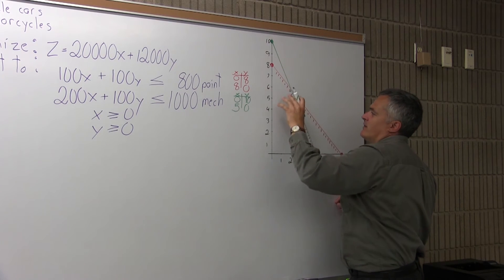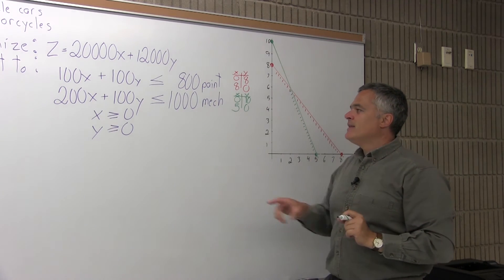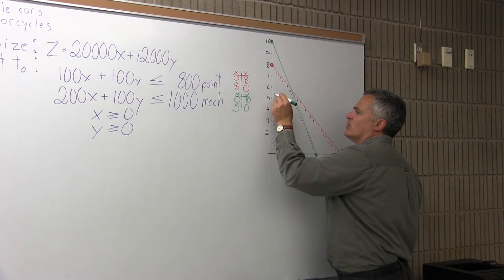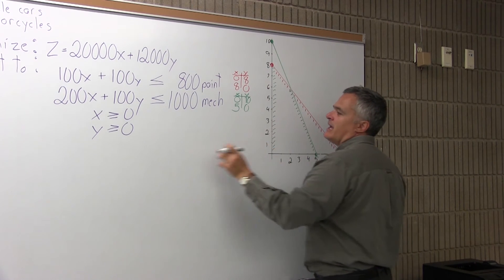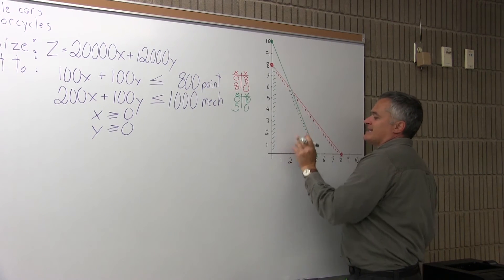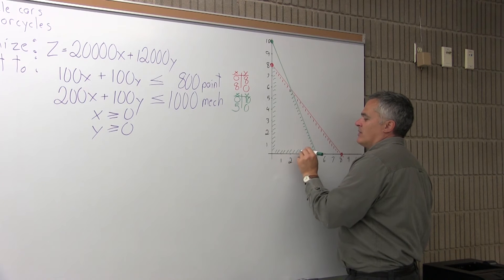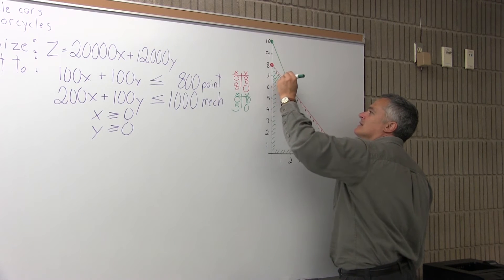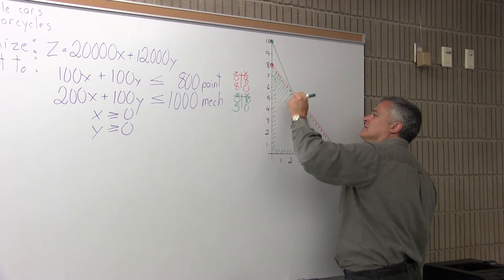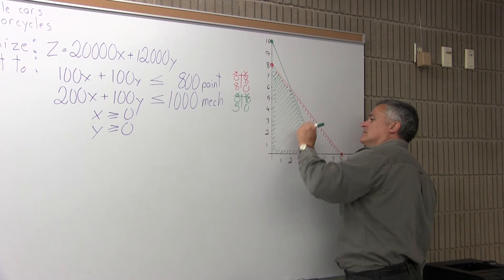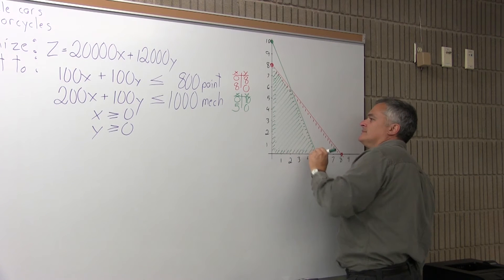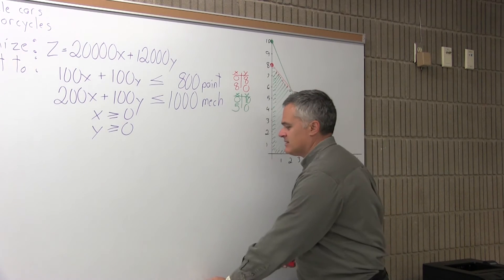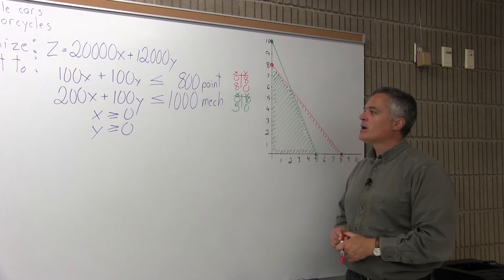I put zero for X and zero for Y in my mechanical constraint and the result is 0 is less than 1000, which is certainly true. So my test point was from the underneath side, and I shade underneath the green line. I need to be below both lines. X greater than or equal to zero keeps me on the right side of the Y-axis, and Y greater than or equal to zero keeps me above the X-axis. The area that satisfies all constraints simultaneously is the area I've shaded — that's the feasible region.